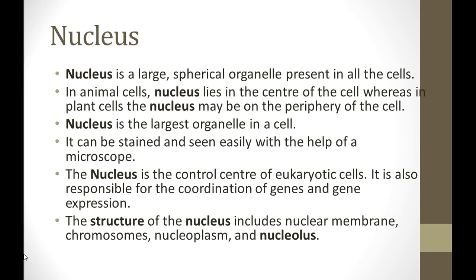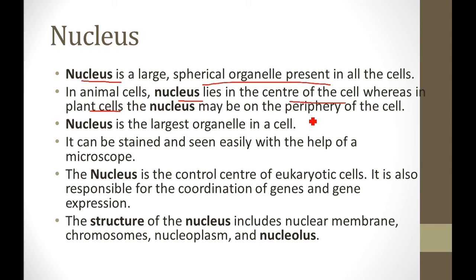Now we will see what the components of the cell are — the first one is your nucleus. What is the nucleus? Nucleus is a large spherical organelle present in all cells. Remember that this organelle, the nucleus, is present in every cell, either unicellular or multicellular. The form may vary but it will be present in every cell. In the animal cell, the nucleus lies in the center of the cell. In the plant cell, it will lie on the periphery.